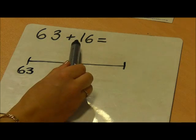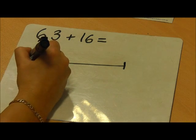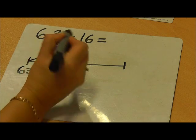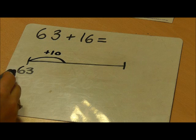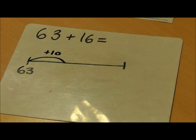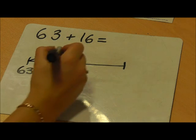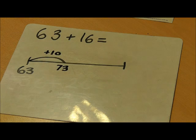I have one ten, so I'm going to do a jump of ten. This will mean that 63, six tens and three units, becomes seven tens and three units. 73.